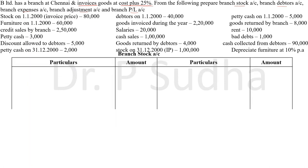The first account we will prepare is branch stock account. Branch stock is an asset — if the value increases we debit it, if it decreases we credit it, and it will have a debit balance. So the opening balance, stock on 1-1-2000, is written on the debit side as balance brought down. Goods invoiced during the year: the head office is sending goods to the branch, so the value of stock increases — we debit it as goods sent to branch, 2,20,000. When the branch returns goods, the value decreases, so we credit goods returned by branch, 8,000.